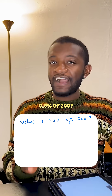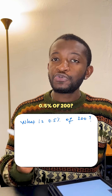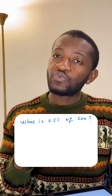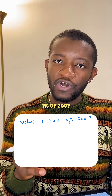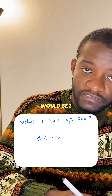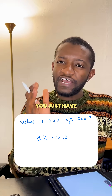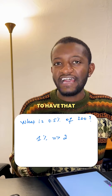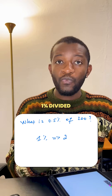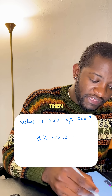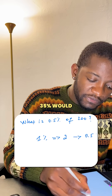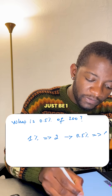What is 0.5% of 200? Same approach as the previous problem. What is 1% of 200? That's 2. Since 0.5% is just 1% divided by 2, you just halve that. So 0.5% of 200 is 1.